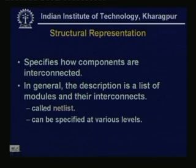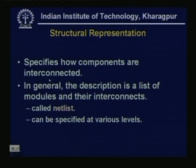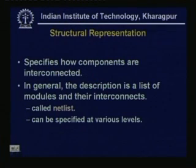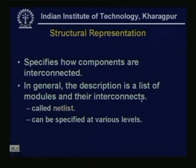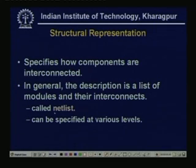Now it is the structural representation. If the designer has enough idea about the design and the structure, it specifies how components are interconnected. The behavioral level or algorithmic level are at some abstract level. Structural means we can tell this is the second level of design, and if the designer is expert they have that idea and can represent the design in structural form. In general the description is a list of modules and their interconnects — this is called the net list.